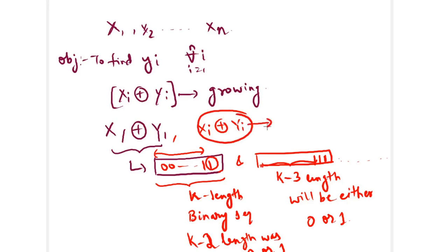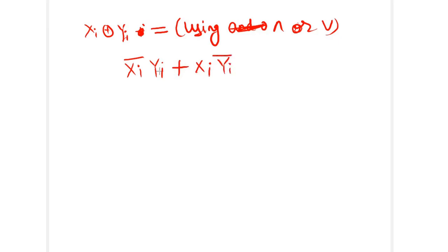And the other idea of XOR, if you know this property, if you know the property of XOR using conjunction or disjunction, like xi OR yi plus xi AND yi bar, which is negative.